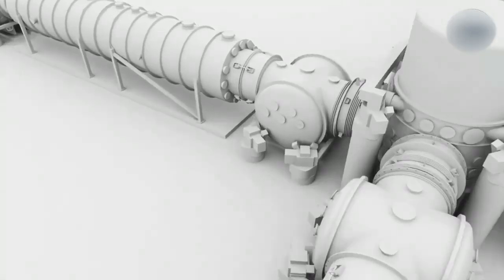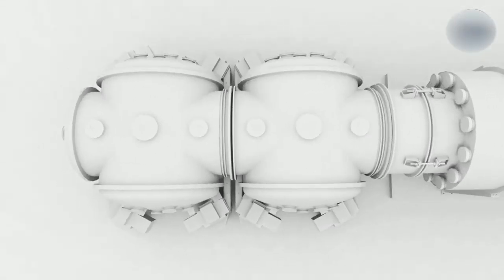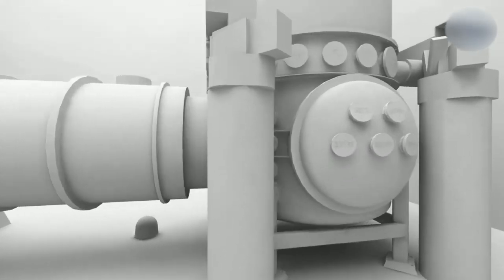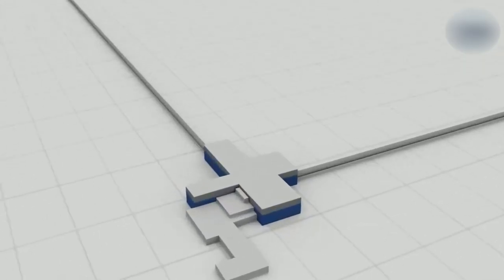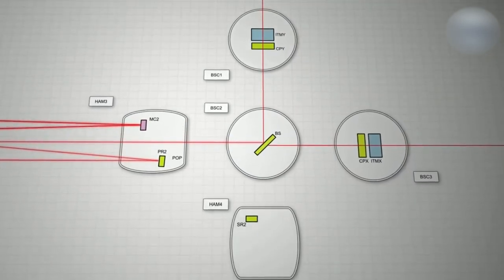For months at a time, the two detectors must collect data while never missing a single data point or falling behind. This is a technological difficulty in and of itself when your detector is spread out over a number of kilometers. Being a member of LIGO is fascinating because it is one of the most complex machines ever built and a marvel of engineering and physics.